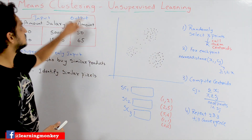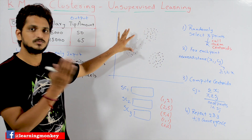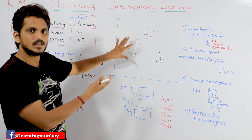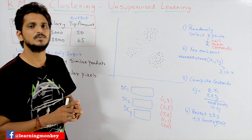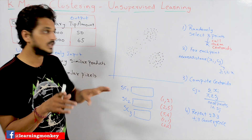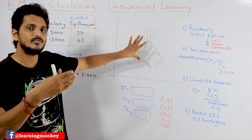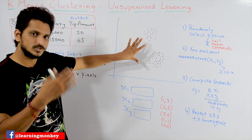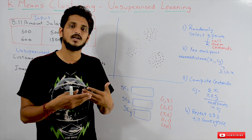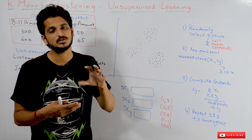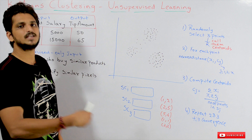Now coming to the K-means clustering model. In this class, we will take a simple example. Usually datasets are not this simple. For understanding purposes, we have chosen a simple dataset in a two-dimensional coordinate system, but you have to think in n-dimensional space. We will discuss how K-means clustering works, its disadvantages, and on which types of datasets it works well in our next classes.